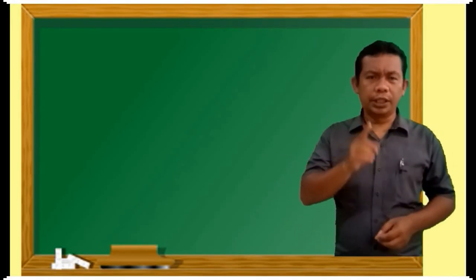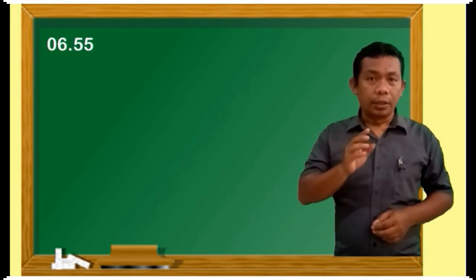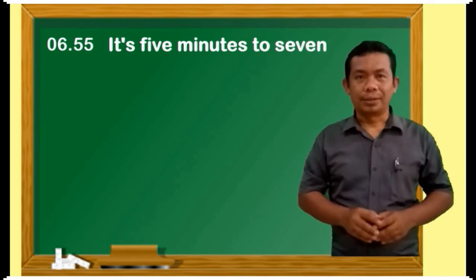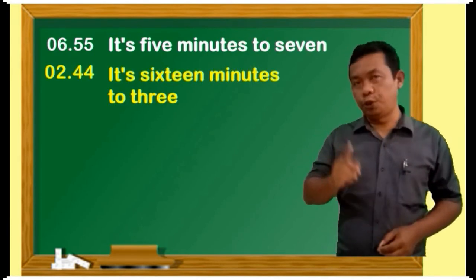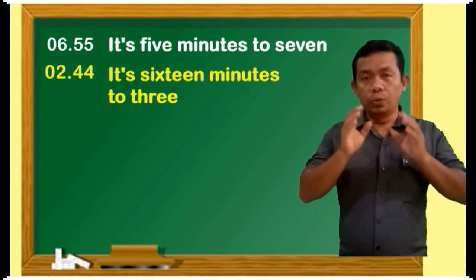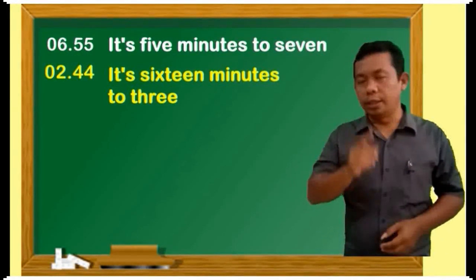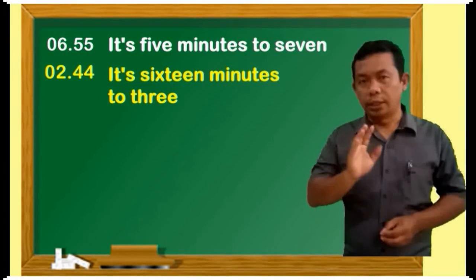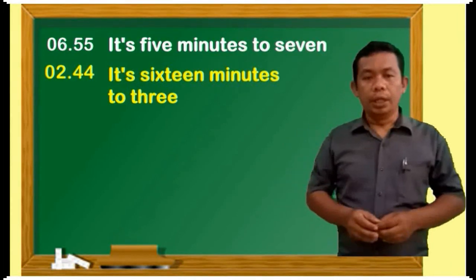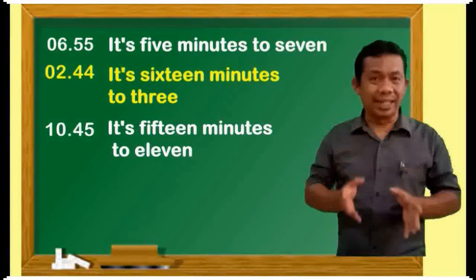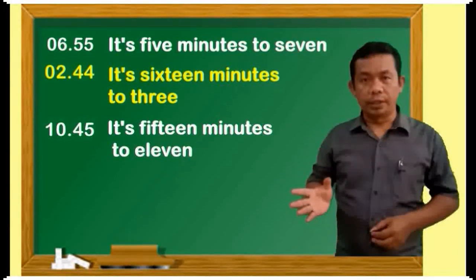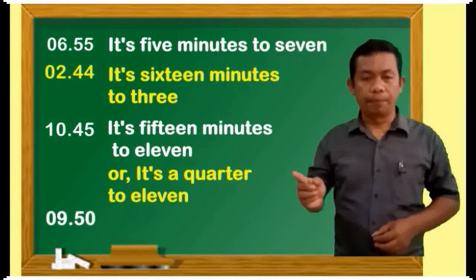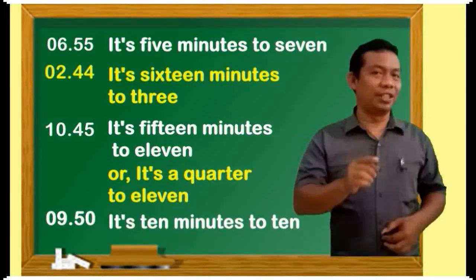The next example: 6.55 — we can say 'It's 5 minutes to 7.' 2.44 — 'It's 16 minutes to 3.' Untuk 15 menit, di dalam bahasa Inggris penggunaannya sama dengan 'past'. For example, 10.45 — we can say 'It's 15 minutes to 11' or 'It's a quarter to 11.' And 9.50 — 'It's 10 minutes to 10.'